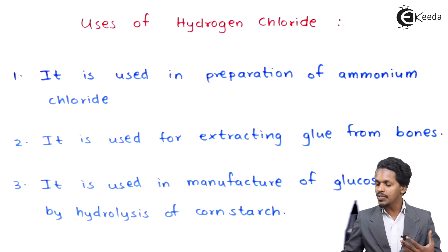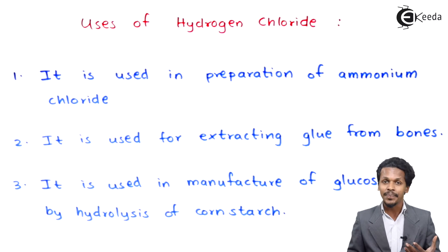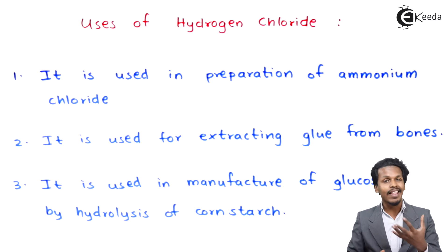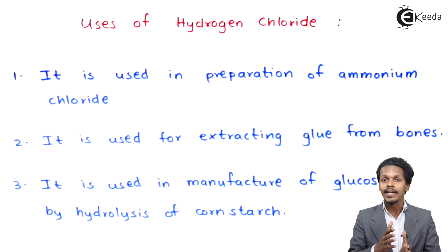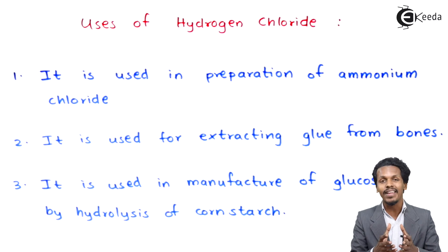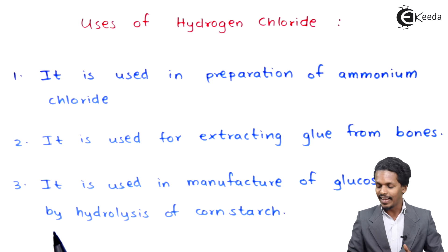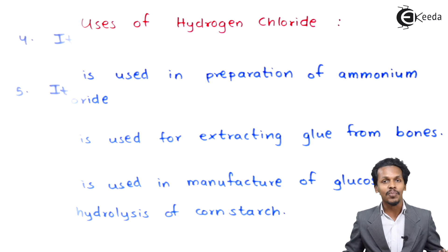The third point: HCl is used in the manufacturing of glucose by hydrolysis of corn starch. In this organic reaction, we perform the hydrolysis of corn starch so as to obtain glucose, and the acid being used in this process is HCl.